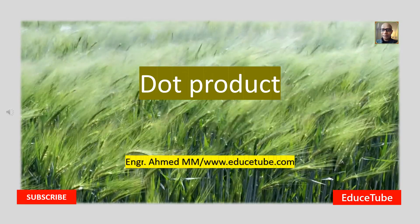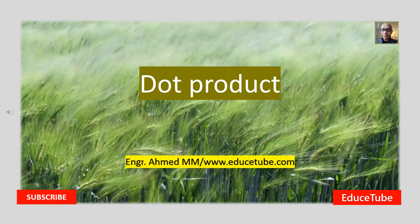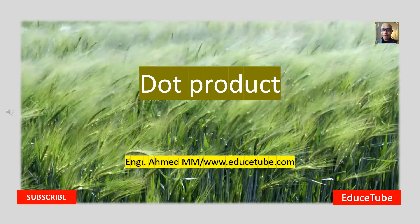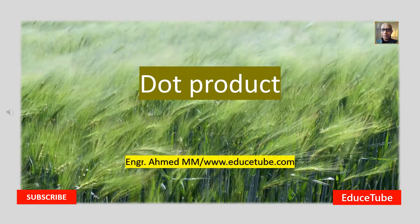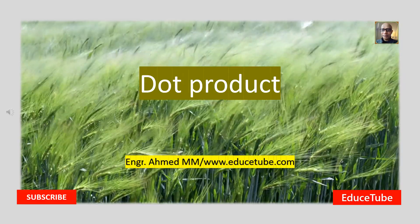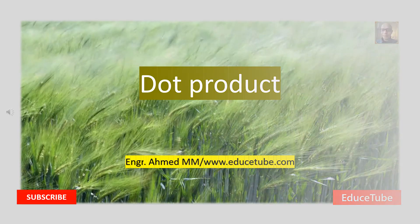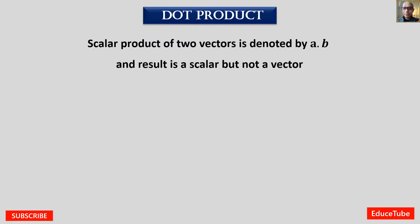Hi everybody. Today I am going to discuss about dot product of two vectors. Let's move ahead to see how it works. Scalar product of two vectors — the product is scalar and it is denoted by a dot b. Another important thing is the result will be a scalar but not a vector.